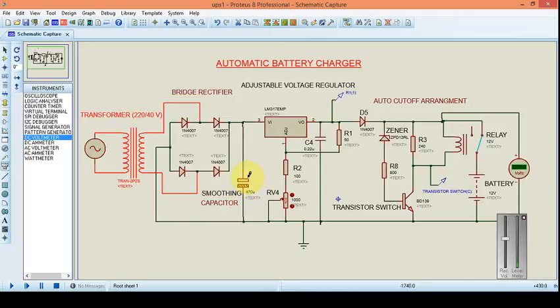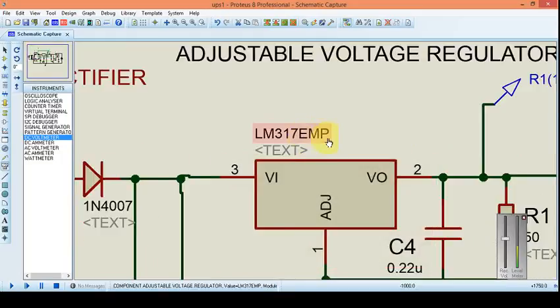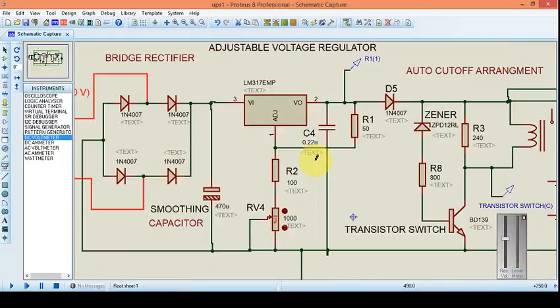The value of the smoothing capacitor must be selected properly. How to select it is not the scope of this article; however, for this particular purpose, it's 470 microfarad. Next is the voltage regulator. Rather than making my own, I'm taking advantage of this LM317 voltage regulator IC. It gives a constant output voltage for a certain range of input voltage. The output voltage depends on these two resistors.